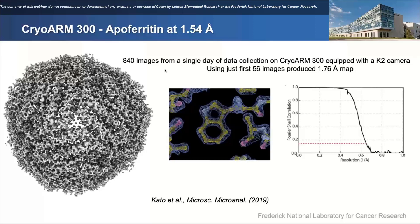When we saw this result, we got even more excited about what we could do with the cryo-arm 200. One thing we took notice of was that when they analyzed the data set, they noticed a changing beam tilt over time during data collection. They eventually determined that each time the objective lens setting was changed, there was a change in beam tilt. With apoferritin's high symmetry, you could potentially overcome imperfect beam tilt estimation by sheer numbers and high particle density. But for other samples this would not be possible, so we had to find a way to work around this more robustly.